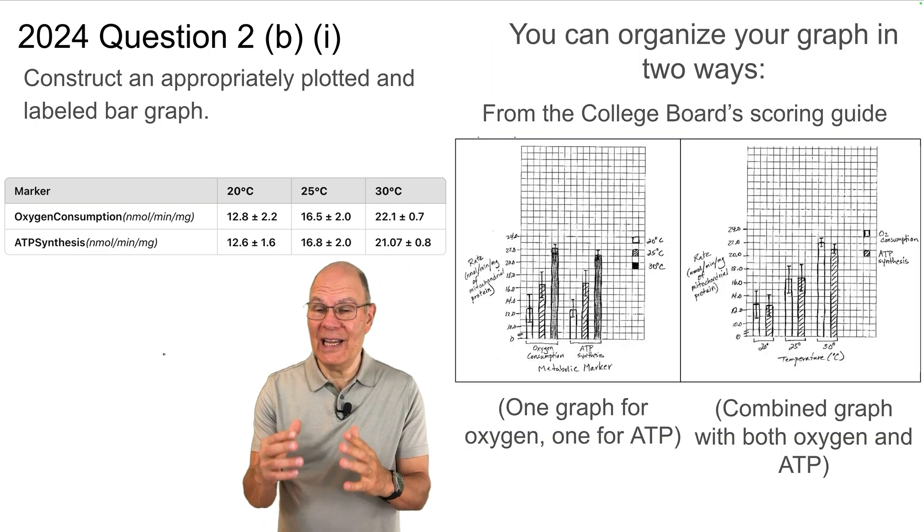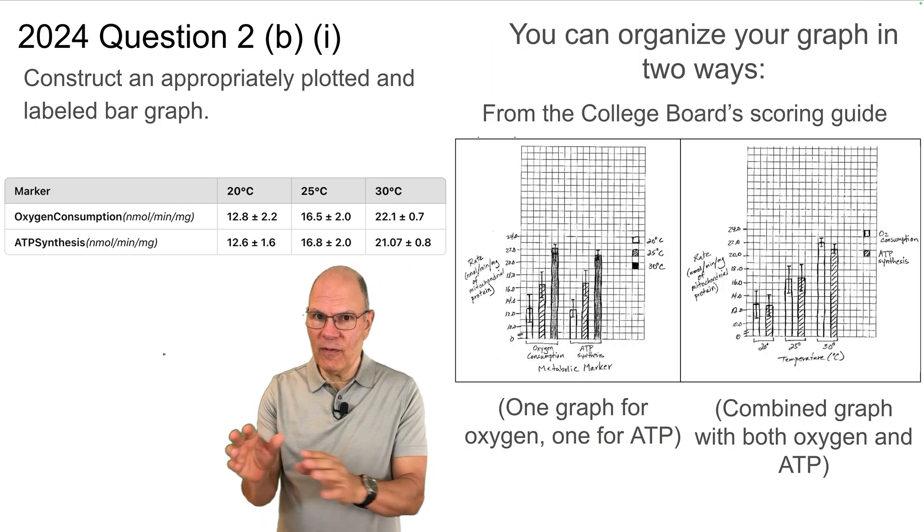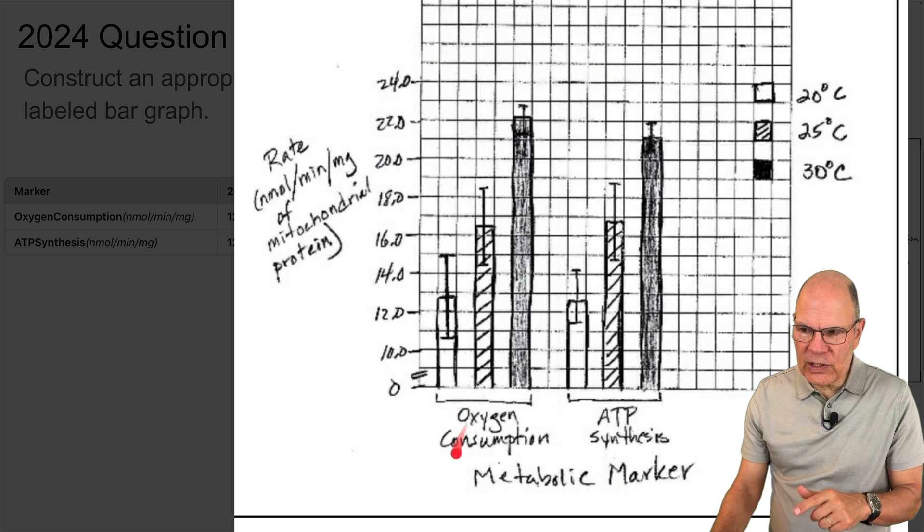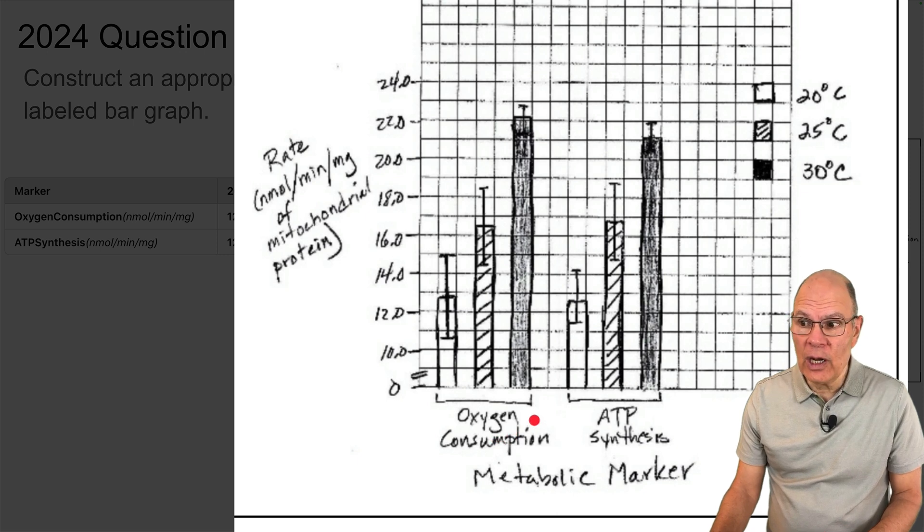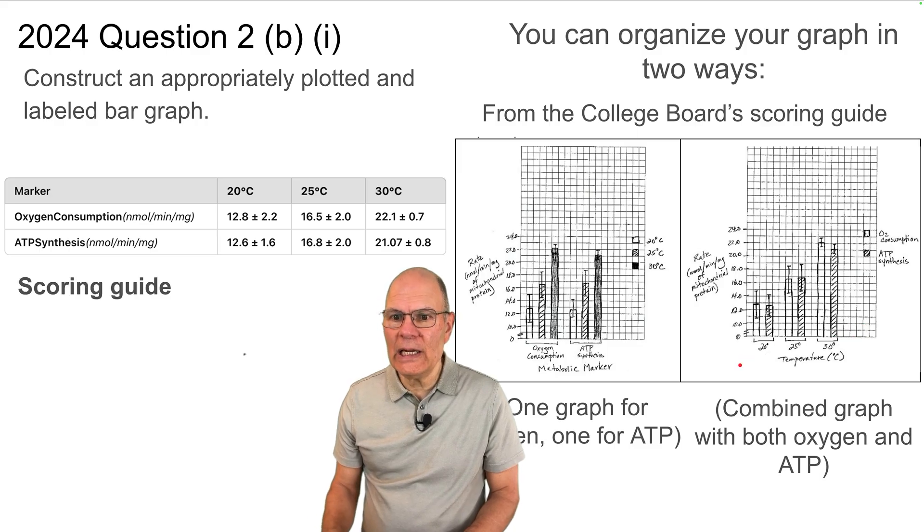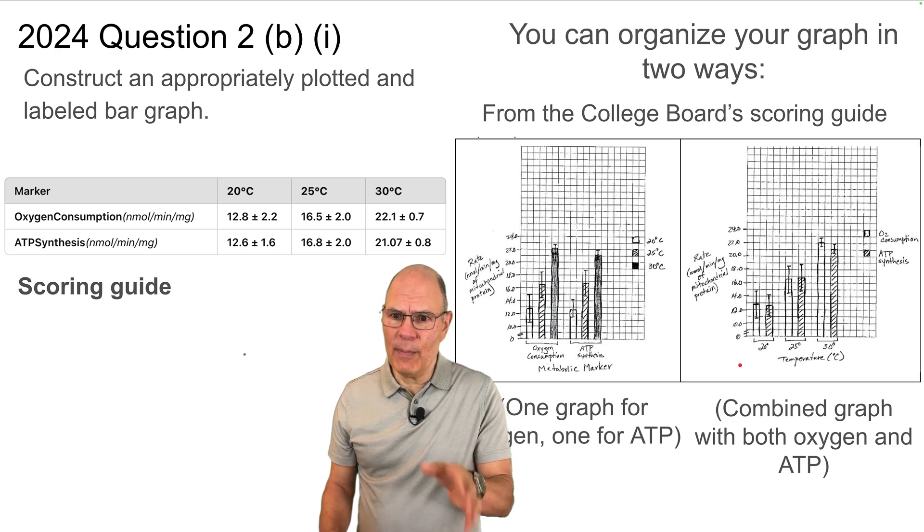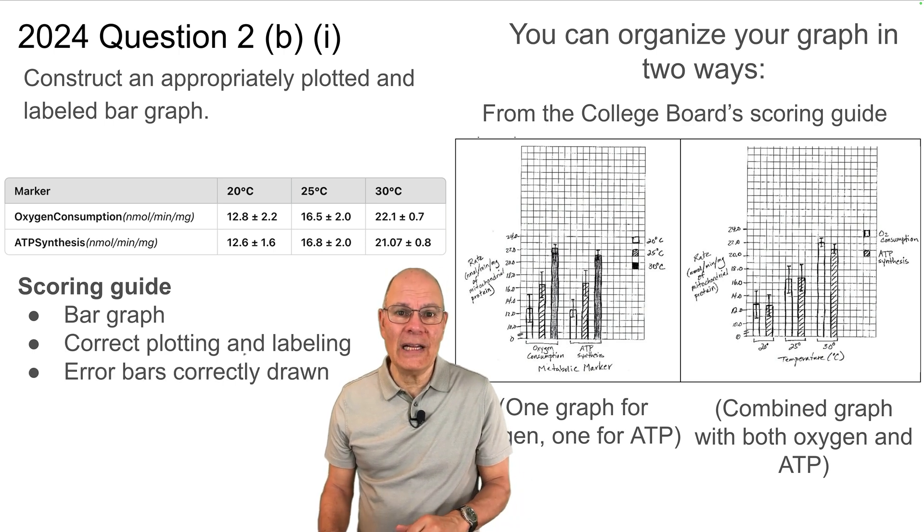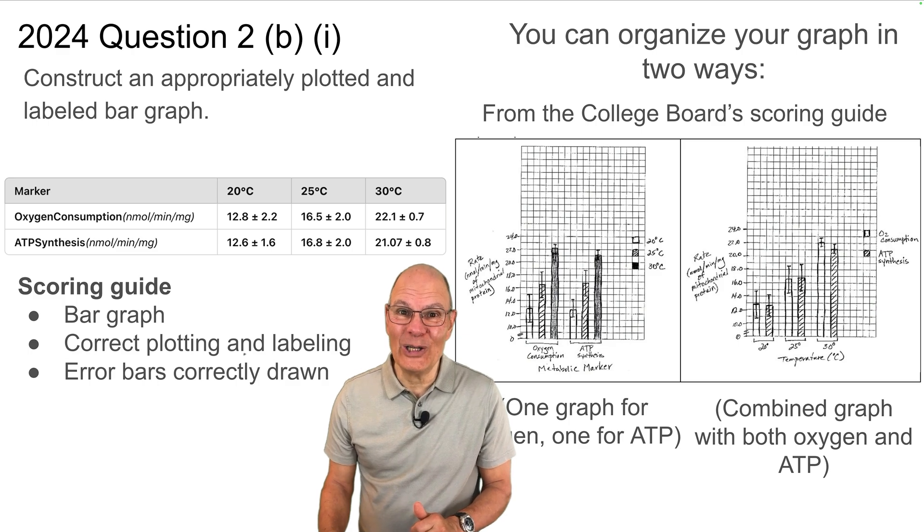Note that you can graph these data in a variety of ways. The College Board provides examples of two in the scoring guide. That's where this image comes from. So in this on the left is different from what we did. What this student did is they clustered oxygen together and ATP synthesis together. And because these are labeled down here, then what you have to do is you have to provide a legend for the temperature, which is what they did right over here. A beautiful graph. This is essentially what we did. Note that the scoring guide involves a couple of things. You have to have drawn a bar graph, you have to have correctly plotted and labeled your data, and you have to have had error bars. That's how you get full credit on a graph like this.